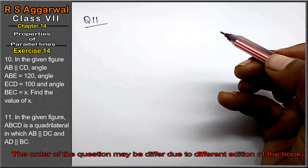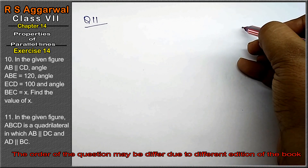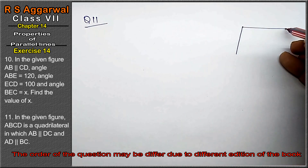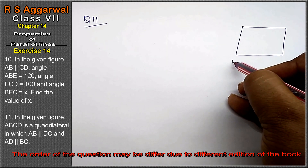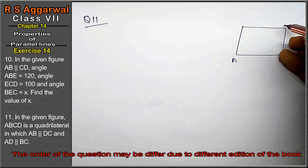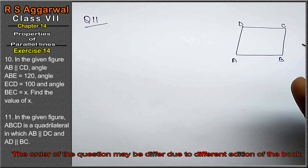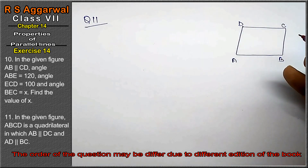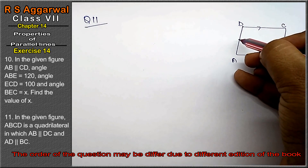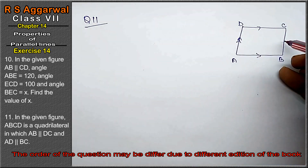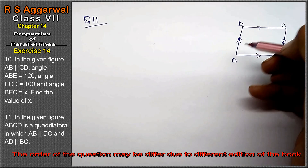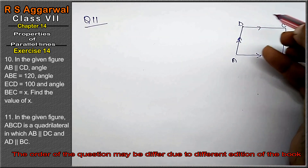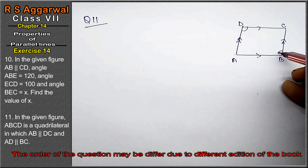Question number 11 is: in a given figure, ABCD is a quadrilateral in which AB is parallel to DC and AD is parallel to BC. Prove that angle ADC is equal to angle ABC.